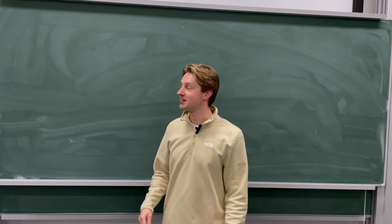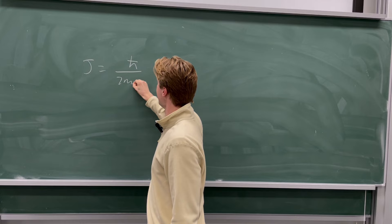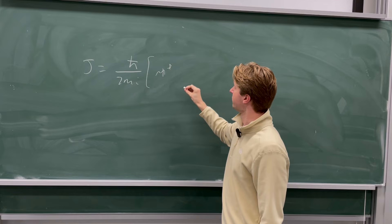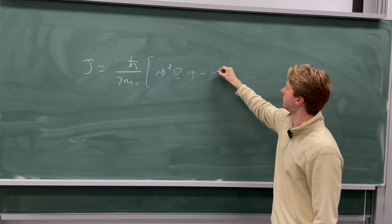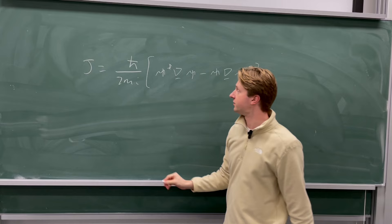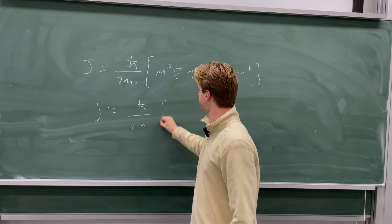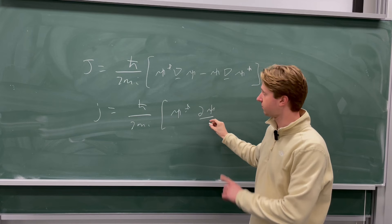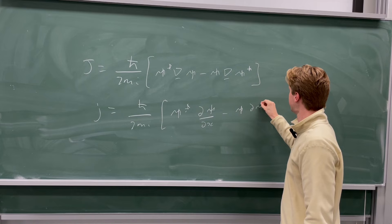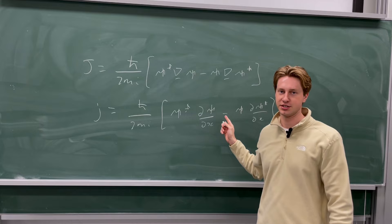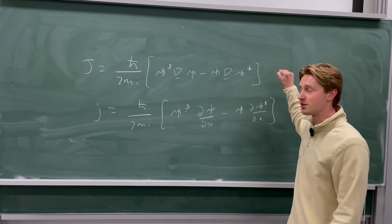The probability current is defined as J equals ℏ over 2mi, multiplied by the bracket containing the conjugate of the wave function ψ* times the gradient of ψ, minus the reverse of that term. In one dimension this looks like the same pre-factor with ψ* times the derivative of ψ with respect to position x, minus the reverse. This is written for a single-particle wave function ψ. According to the Kirchhoff rule for quantum wires, this probability current must be conserved through any junction in a network of wires.